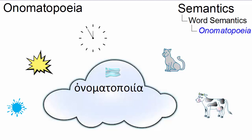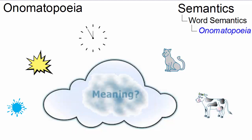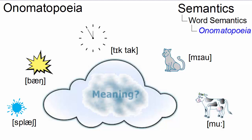Onomatopoeia is a Greek word consisting of onoma, which stands for name, and peia, which means I make. In semantics, this term refers to lexemes that phonetically imitate, resemble, or describe the source of the sound to which they refer.